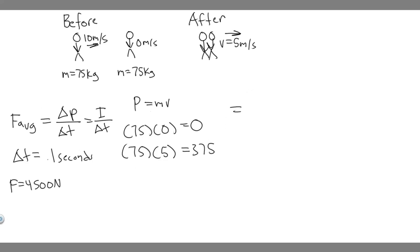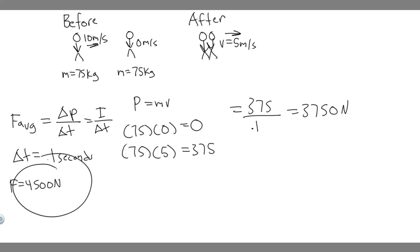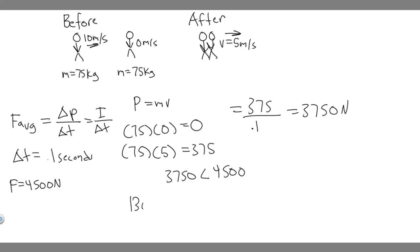To find F average, we take 375 and divide by the change in time, which is 0.1. So 375 divided by 0.1 gives us 3,750 newtons. We know that if it's greater than 4,500, the bones will break. But notice it's not greater — 3,750 is less than 4,500 — meaning their bones are not going to break. So the bones won't break, since the force experienced is less than the force required to break bones.